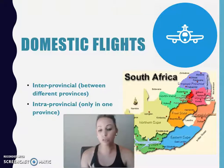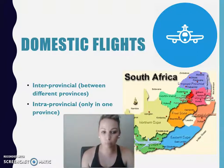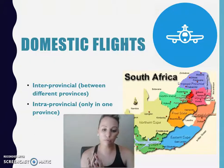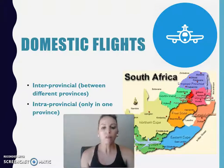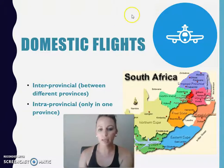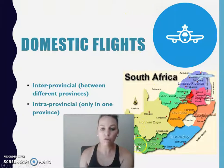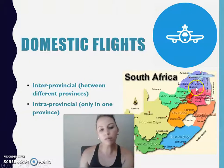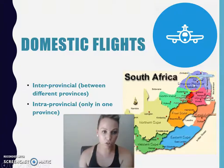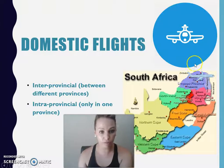We have two different types of domestic flights: interprovincial and intraprovincial. An interprovincial flight goes from one province to another province — for example, from Western Cape to Limpopo. When the flight stays within only one province, we speak about intraprovincial flights.